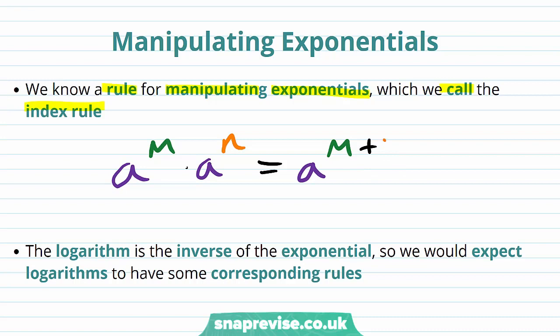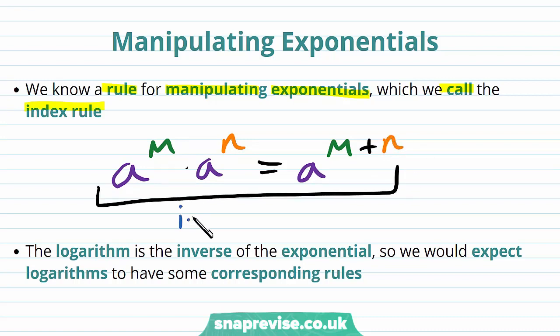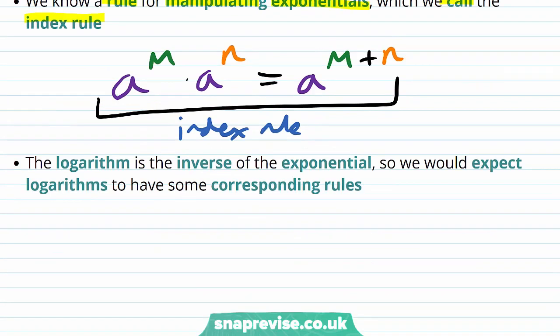And this is called an index rule. The logarithm is the inverse of the exponential, so we would expect logarithms to have some corresponding rules.